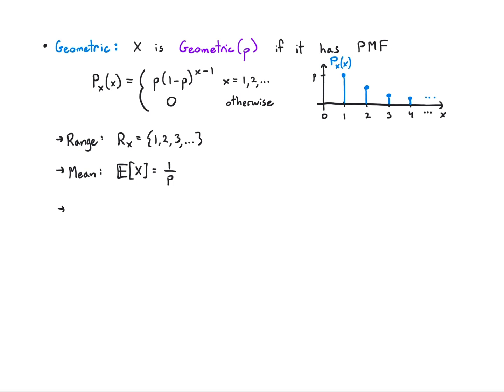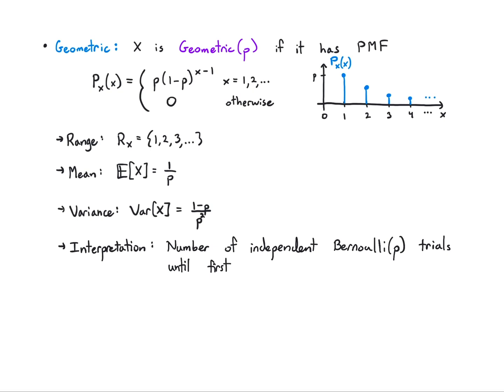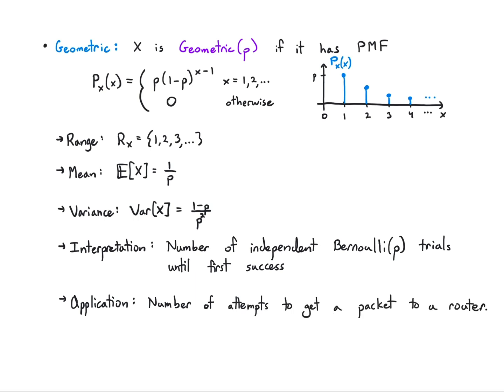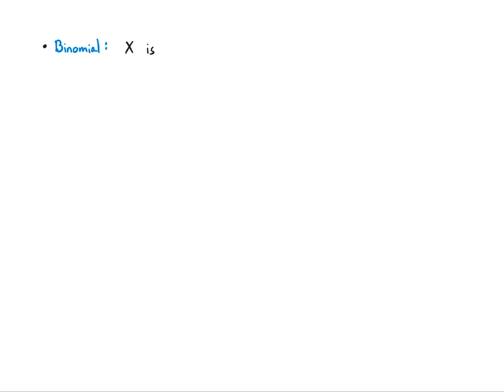The range is the natural numbers: 1, 2, 3, and so on. The mean turns out to be 1/p — it's a bit complicated to derive since when taking the mean you get x * p * (1 - p)^(x - 1), which is annoying to work out, so it's nice to have this result. The variance is (1 - p) / p². The interpretation is: this is the number of independent Bernoulli(p) trials needed to see the first success. For example, flipping a fair coin and waiting for the first heads models a Geometric(1/2). An application could be the number of attempts to get a packet to a router — you retransmit, it fails, fails, and finally succeeds; that count follows Geometric(p).